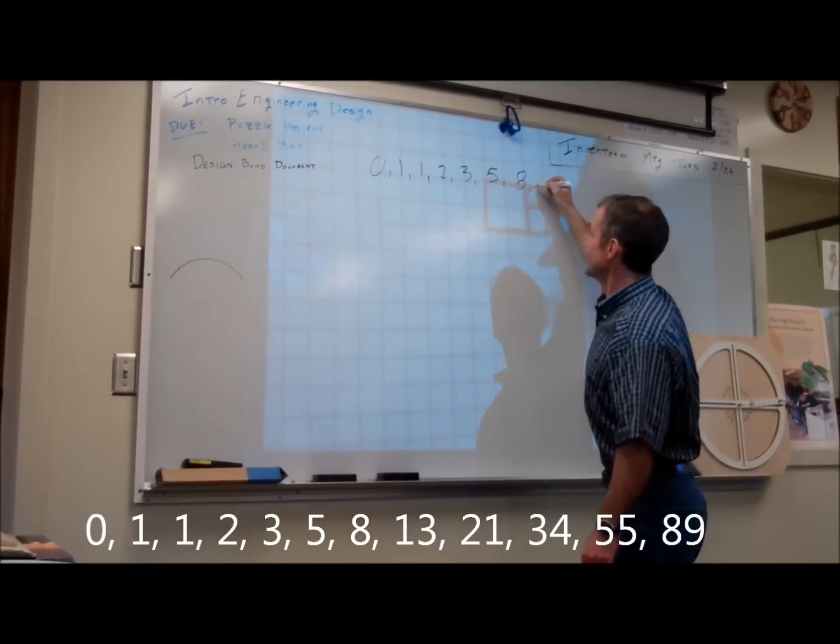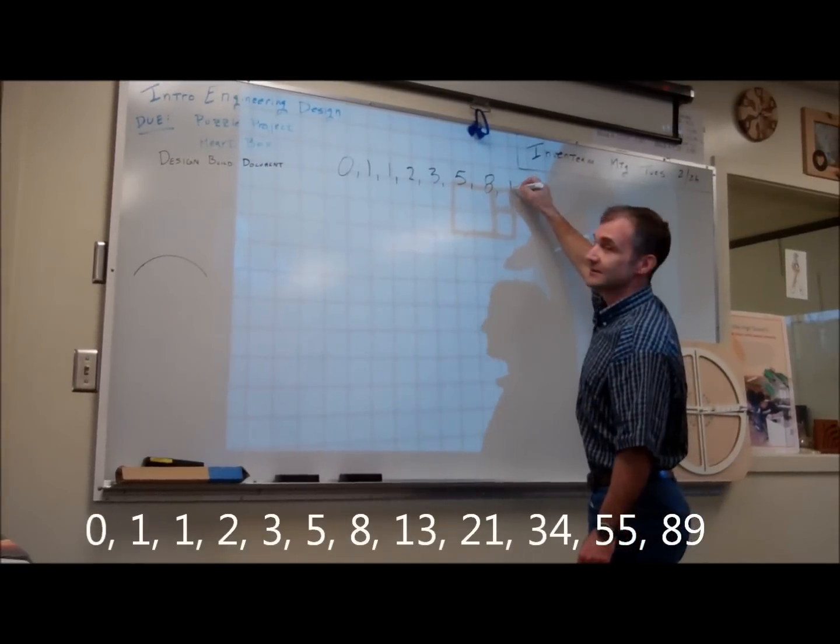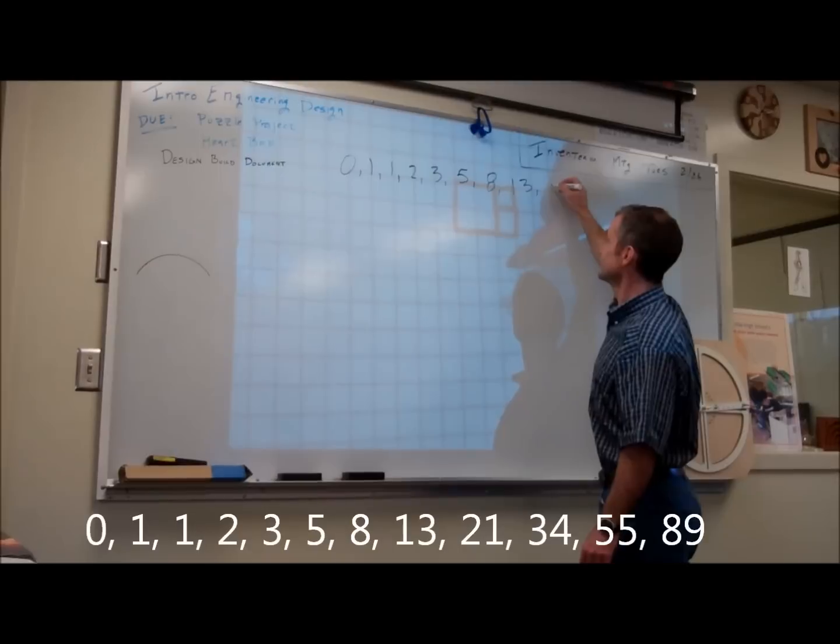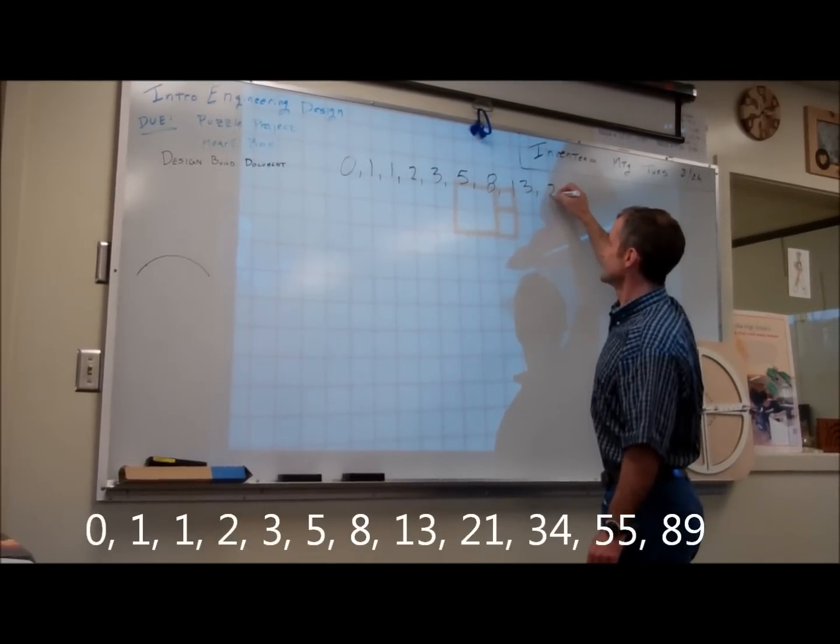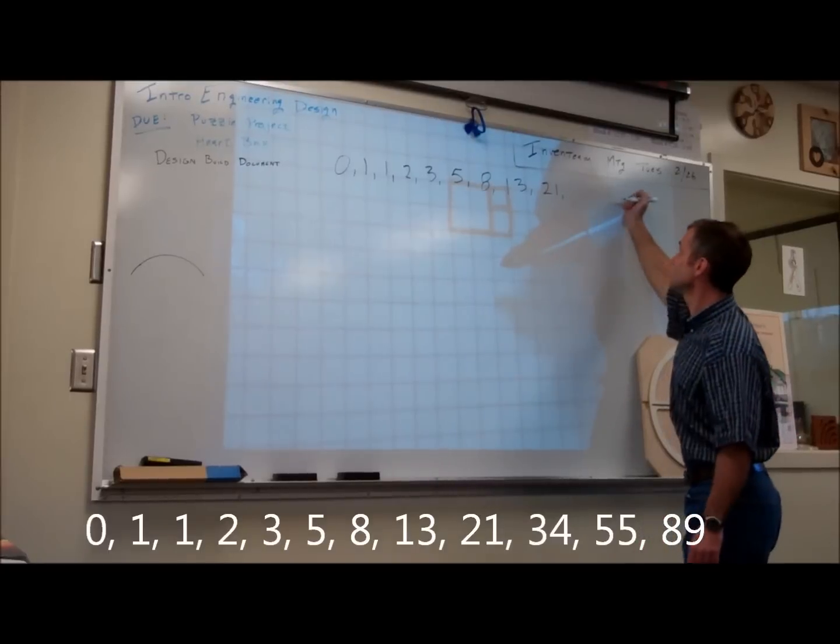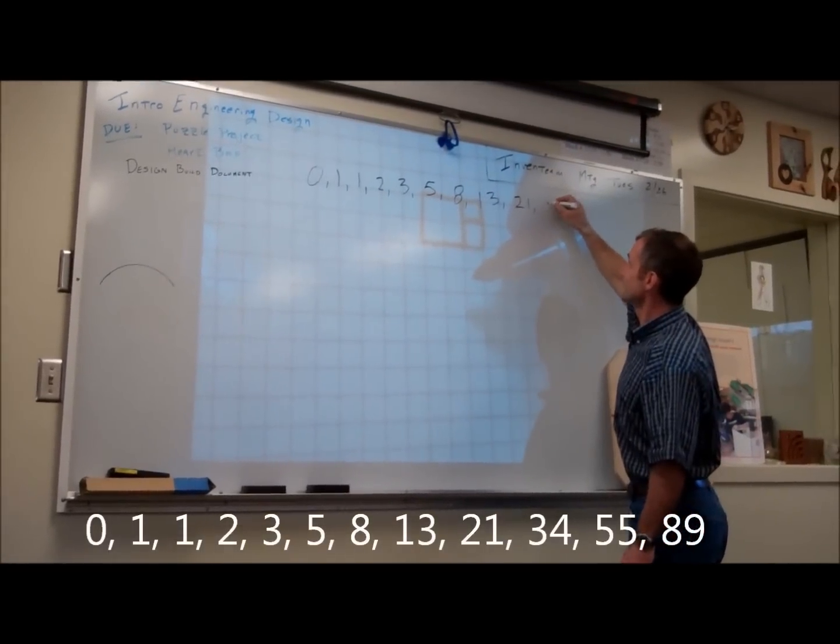Eight. Travis, the next one? Thirteen. Tyler, the next one? That would be twenty-one. Next one, Tyler? Thirty-four.